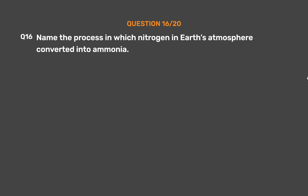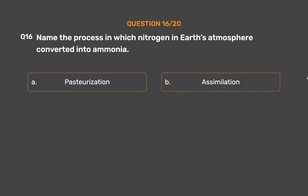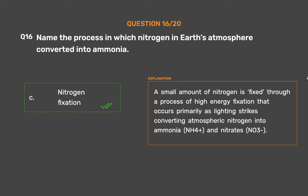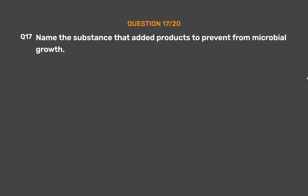Question number 16. Name the process in which nitrogen in Earth's atmosphere is converted into ammonia. Option A: Pasteurization. Option B: Assimilation. Option C: Nitrogen fixation. Option D: Nitrogen cycle. The correct answer is Option C, Nitrogen fixation. A small amount of nitrogen is fixed through high-energy fixation, occurring primarily as lightning strikes, converting atmospheric nitrogen into ammonia (NH4+) and nitrates (NO3-).